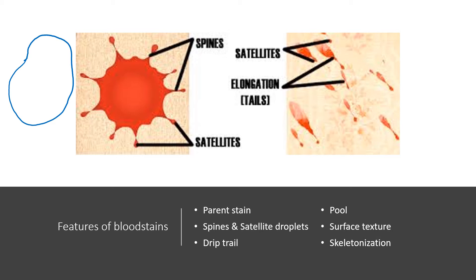The surface texture of a bloodstain can tell you how much coagulation has happened, how fresh it is, whether or not any amount of it's been absorbed, and whether or not it's completely dry. Skeletonization refers to the phenomenon where, when you wipe away a bloodstain, a little bit remains behind in a ring.